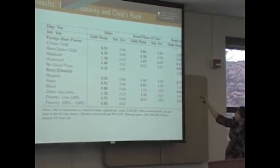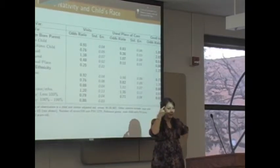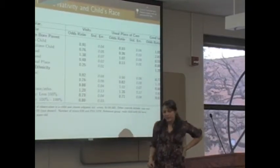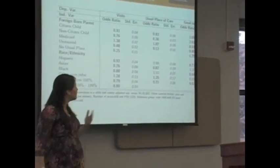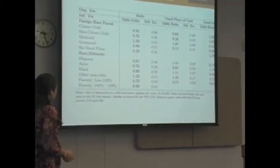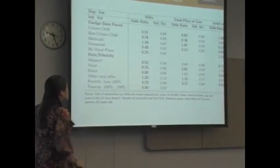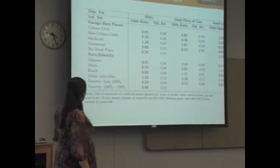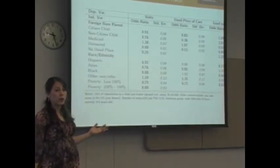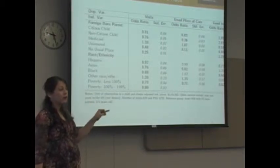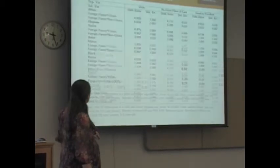Look at this group — the odds of having good to excellent health. This is perceived health, this is self-reported. Very interesting that even though they don't visit the doctor and they don't have a usual place of care, they consider their children healthier compared to white children of native families.